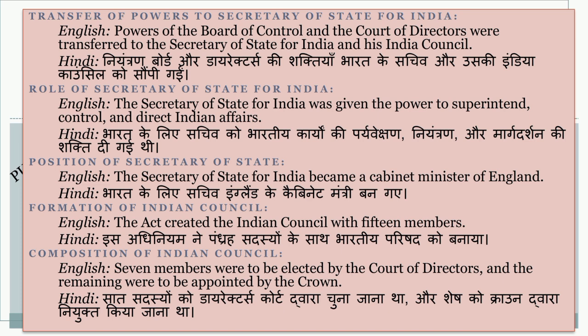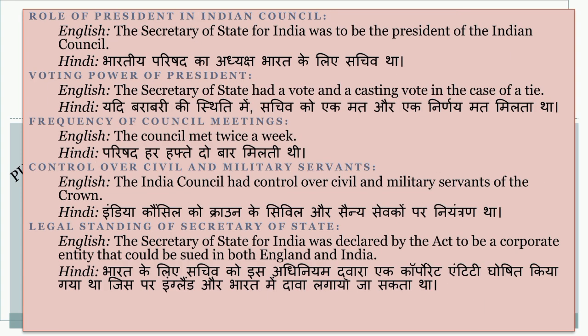Seven members were to be elected by the Court of Directors and the remaining were to be appointed by the crown. Saath sadasyon ko directors dwara chuna jana tha aur shesh ko crown dwara niyukt kiya jana tha. The Secretary of State for India was to be the President of the Indian Council. Bhartiya Parishat ka adhyaksh Bharat ke liye sachiv tha. The Secretary of State had a vote and a casting vote in the case of a tie. Yadi barabari ki sthiti mein sachiv ko ek mat aur ek nirnayak mat milta tha. The council met twice a week. Parishat har hafte do baar milti thi.